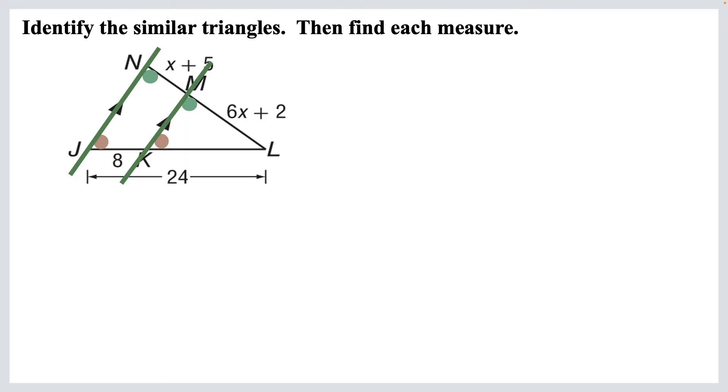Now, what triangles are we looking at here? We've got the big one, okay? And now we also have this little one over to the right. So those are the two triangles we're looking at. We know they're similar by the angle-angle similarity. Because we found those two pairs of congruent angles. Now we need to find each measure, right?